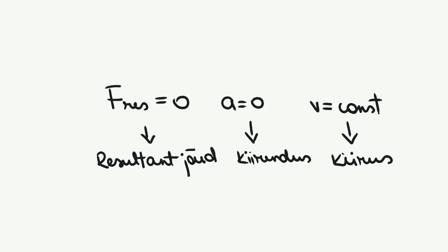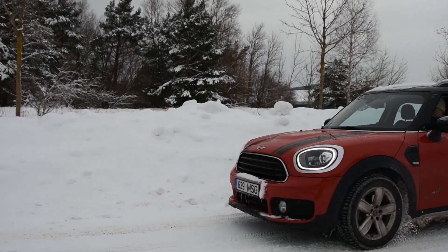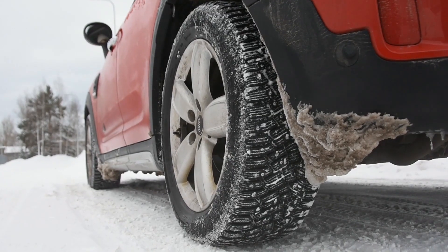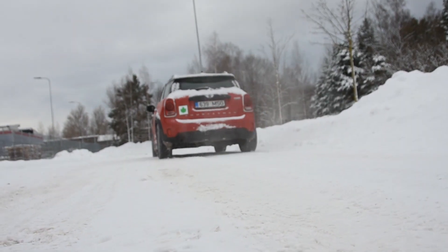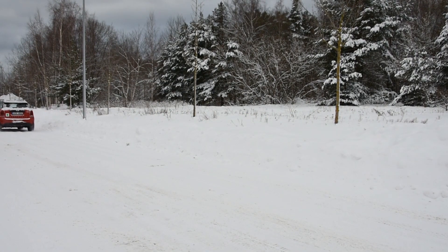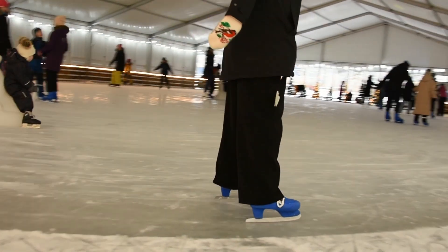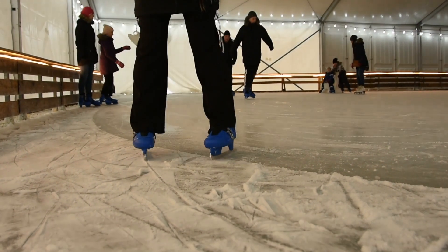Inertsi on näha igal pool meie ümber. Kui auto peatub, liigub juht inertsi tõttu edasi, kuni turvavöö ta peatab. Auto hakkab uuesti liikuma kui juht vajutab gaasipedaalile. Kuni juhi rakendatud jõud ega mingi muu jõud autot ei mõjuta, on see paigalolekus. Üle jää uisutades liigub uisutaja edasi, kuni ta rakendab jõudu, et end peatada või suunda muuta.